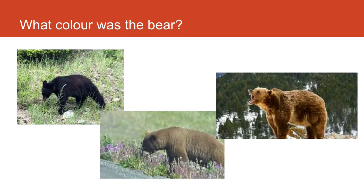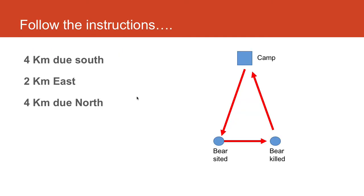As I told you the story, you were building a mental model — a mental picture of what a hunter in the wilderness would look like and what a bear would look like. But you did not expect me to ask the colour of the bear. So if we listen to the instructions carefully, this is what I told you: go four kilometres due south, then two kilometres east, then four kilometres due north back to his campsite.